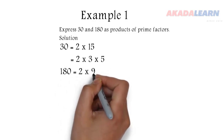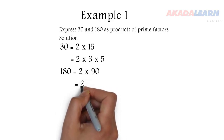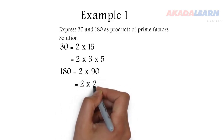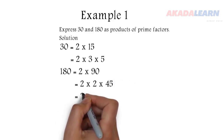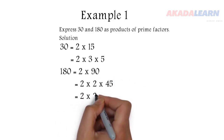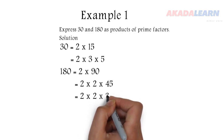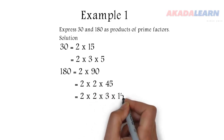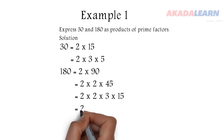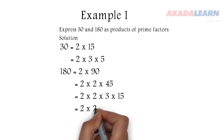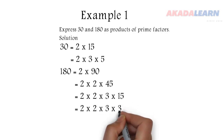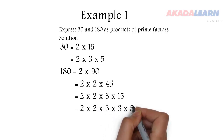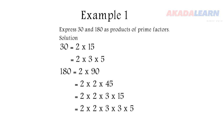2 will go into 180 90 times. 2 can still go into 90 — it will go 45 times. 2 can no longer go, but 3 can go into 45. How many times will 3 go? 3 will go into 45 15 times. 3 can still go into 15 — we keep splitting and breaking down the large numbers. 3 will go 5 times. So 180 is the same as 2 times 2 times 3 times 3 times 5.